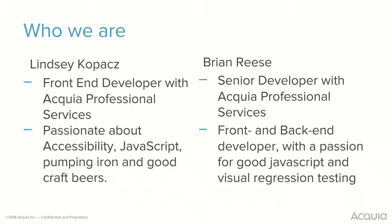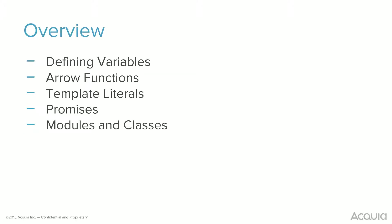Just a quick disclaimer: as much as I'd love to say we talk about every single thing in ES6 and beyond, this is a 45-minute talk. We're going to put some resources to follow up, but we'll talk about the things I think are most useful. We can't talk about everything, otherwise we'd be here for a whole day. Quick overview of what we'll be covering: defining variables, arrow functions, template literals, promises, and modules and classes. At the end, we put together a little example — a Drupal module that uses some of these concepts.